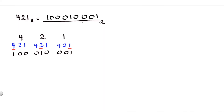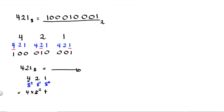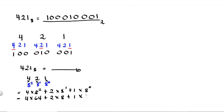To check our answer, we can convert 421 octal into decimal. To do that, multiply each digit by increasing powers of 8: 8 raised to 0, 8 raised to 1, and 8 raised to 2. So: 4 times 8 raised to 2, plus 2 times 8 raised to 1, plus 1 times 8 raised to 0. That gives us 4 times 64, plus 2 times 8, plus 1 times 1.